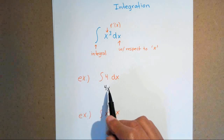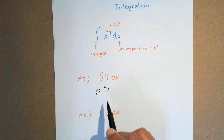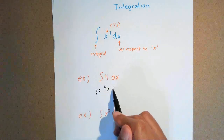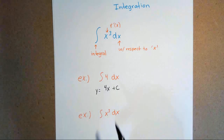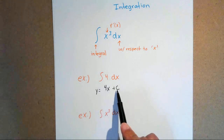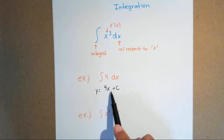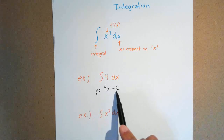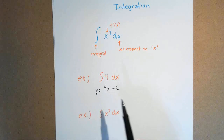Once you find your original equation, you have to make sure that you add a C. The reason we add that C is because we don't know what number was there before. No matter what, anytime we find this derivative, that C is going to vanish. So anytime you find the antiderivative, you have to add that constant C.